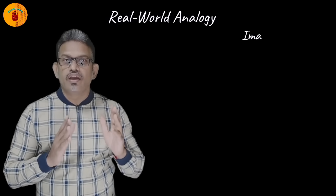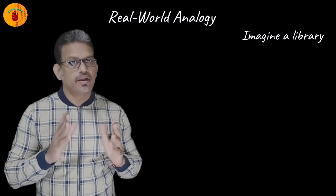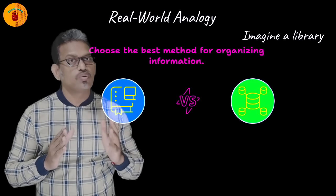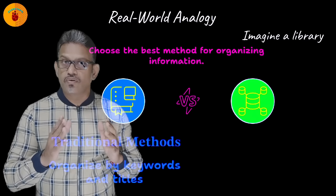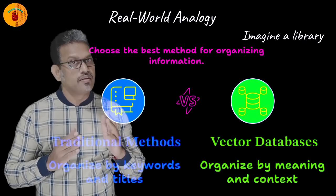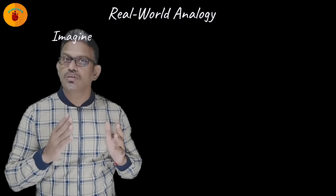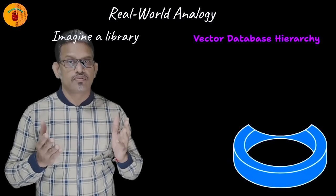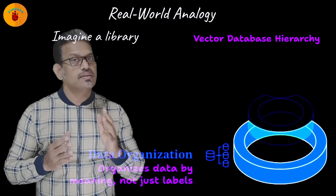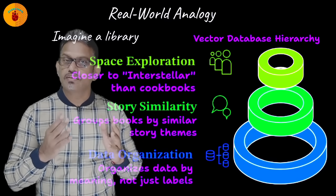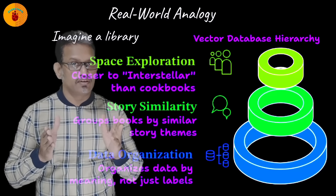Let's understand it with a real world analogy. Imagine a library where books are not organized by title or author, but by how similar their stories are. Romance novels are grouped together, sci-fi books are near each other. A book about space exploration is closer to Interstellar than to a cookbook. A vector database does this for data — it organizes information by meaning, not just by keywords.